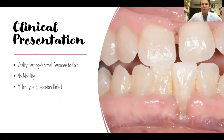When these cases come in, there are a few things that we commonly look for as periodontists. First, we're going to check tooth vitality — endodontic testing to make sure that the tooth responds normally to cold. The key thing we look at in terms of whether or not we're doing a soft tissue graft is tooth mobility, which is going to be a key prognostic factor for long-term good prognosis.